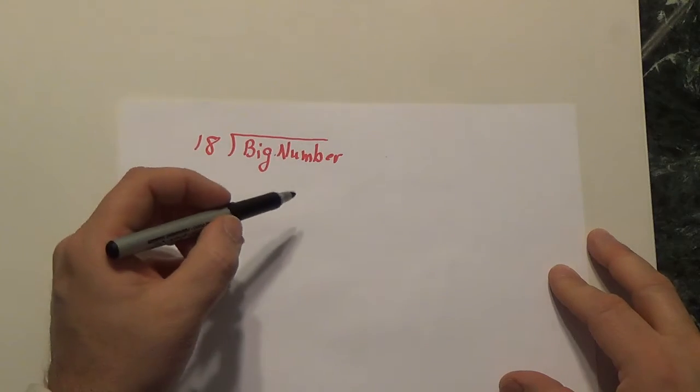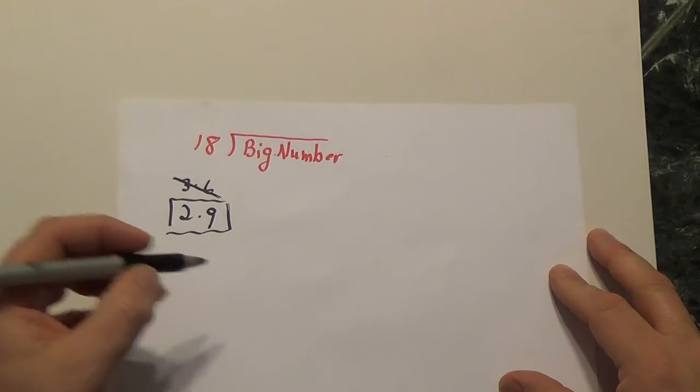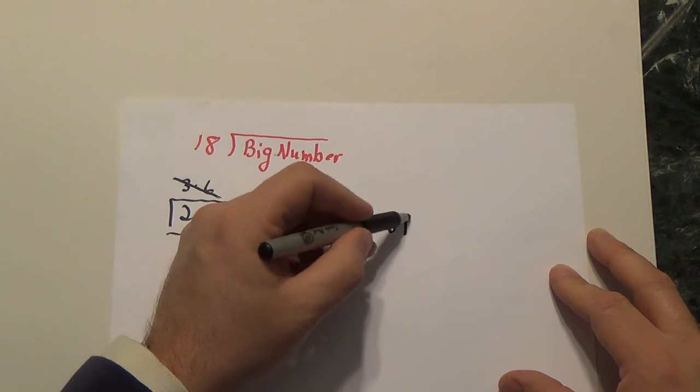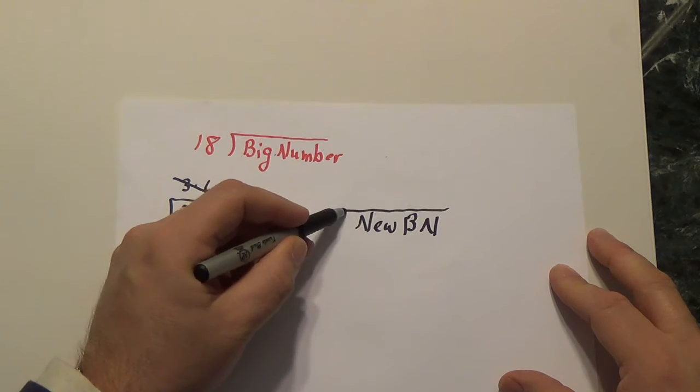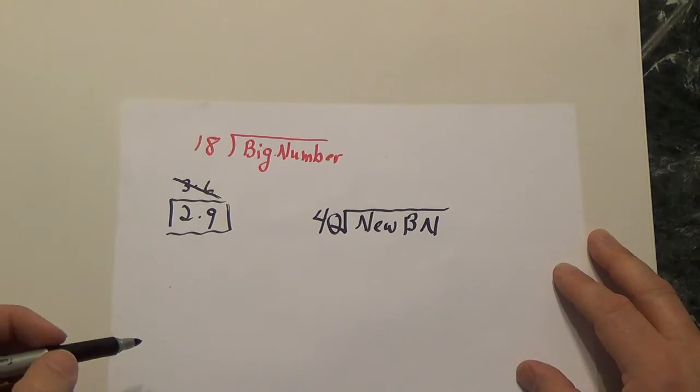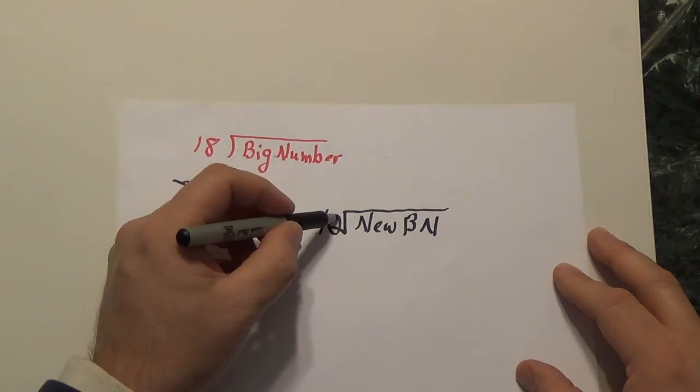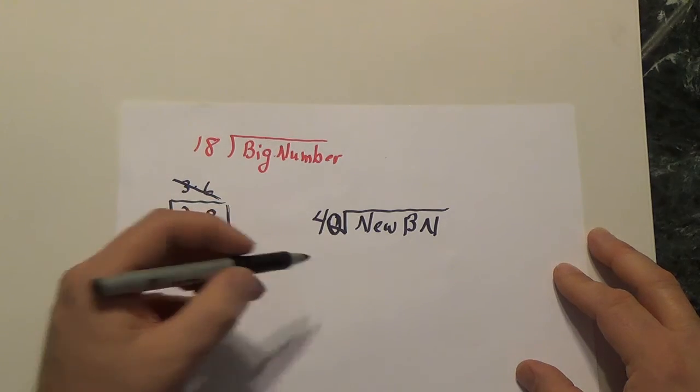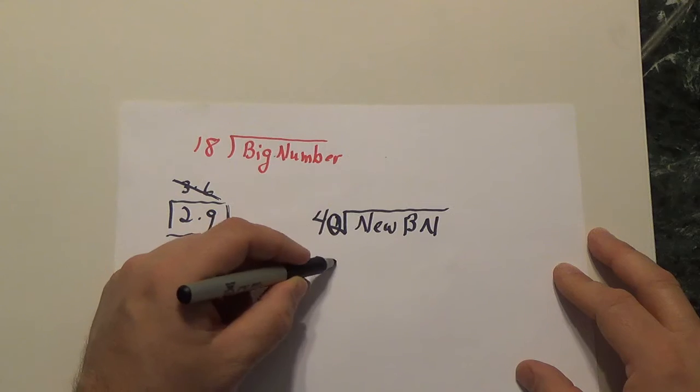Likewise, if you wanted to see if some big number, new big number, is divisible by 40. Well, what can we do to 40 to check it? I can think that this is 4 times 10, but that's not a relatively prime pairing.